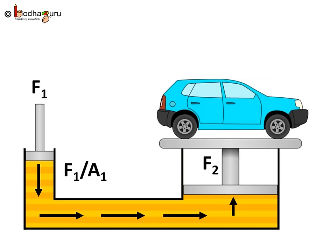Now, here in the larger piston, the pressure would be F1 by A1. So, the total force working on the larger piston would be F2 and force as we know is pressure multiplied by total area.